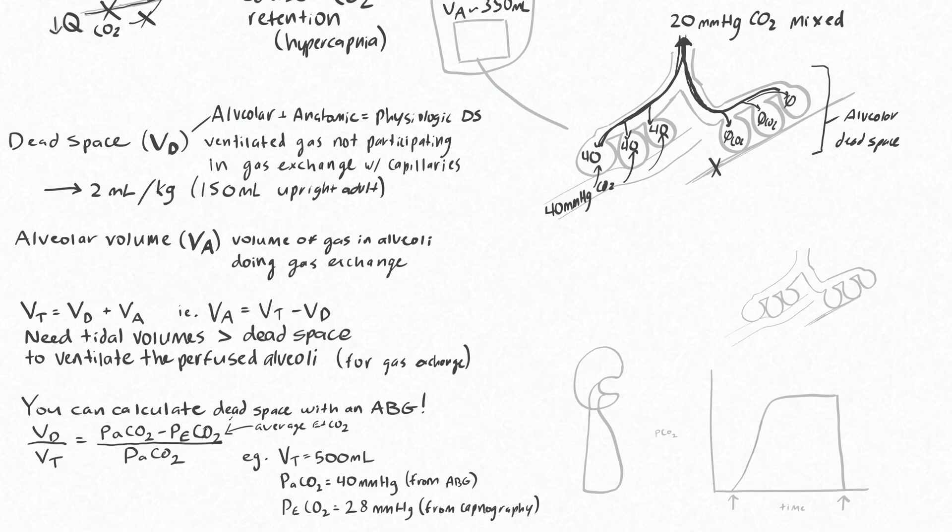Let's take an example of a patient with a tidal volume of 500 mils. We're going to say that their PaCO2 is 40 millimeters of mercury, which is normal, and we've got this from an ABG. We calculate their average expired CO2 to be 28 millimeters of mercury, and this is from the capnography.